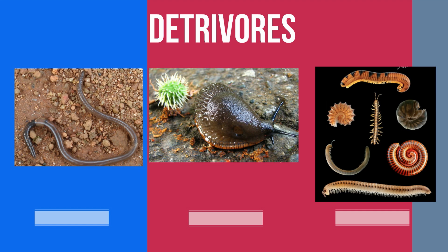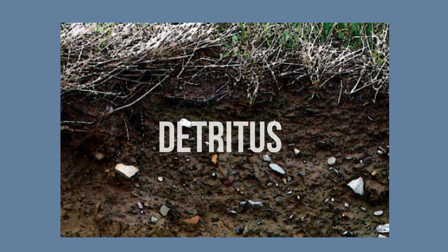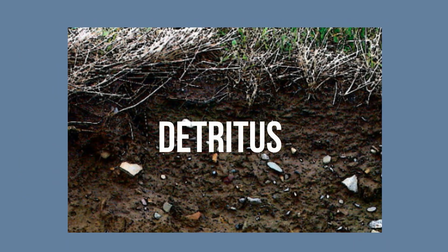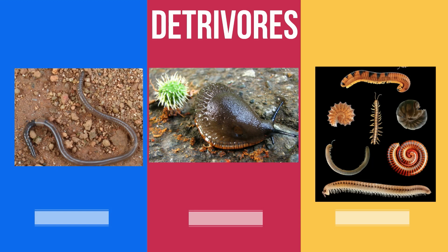Detritivores are individuals that feed on detritus. A common example is the soil found in your yard. Detritivores are different than saprotrophs because they have the ability to ingest small portions of this organic material. Examples include earthworms, slugs, and millipedes.